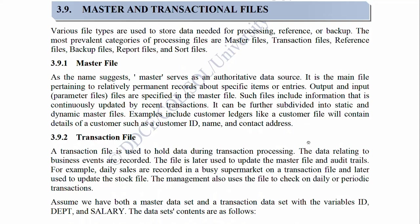3.9.1 Master Files: As the name suggests, the master file serves as an authoritative data source. It is the main file pertaining to relatively permanent records about specific items or entries. Output and input parameter files are specified in the master files. Such files include information that is continuously updated by recent transactions. It can be further subdivided into static and dynamic master files. Examples include customer ledgers — a customer file will contain details such as customer ID, name, and contact address.